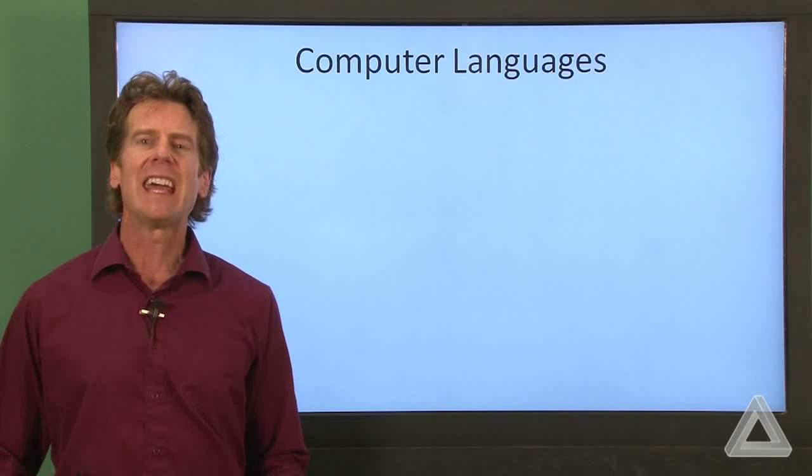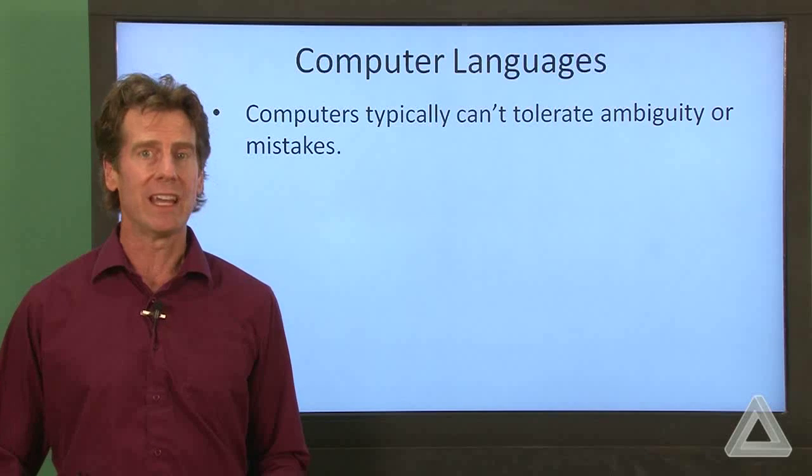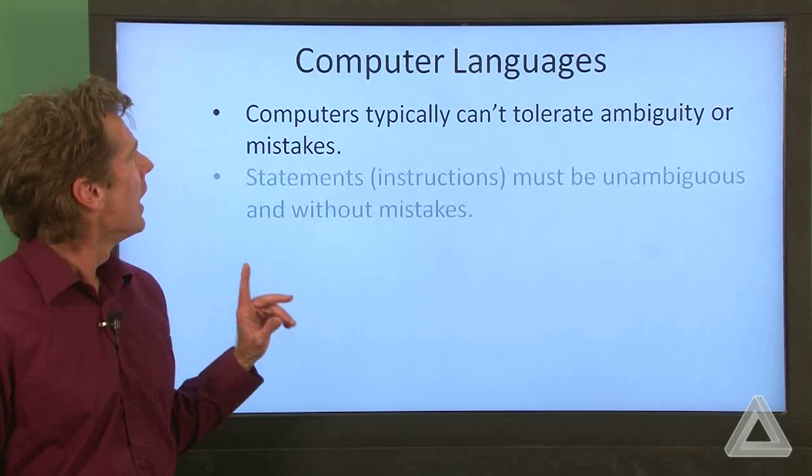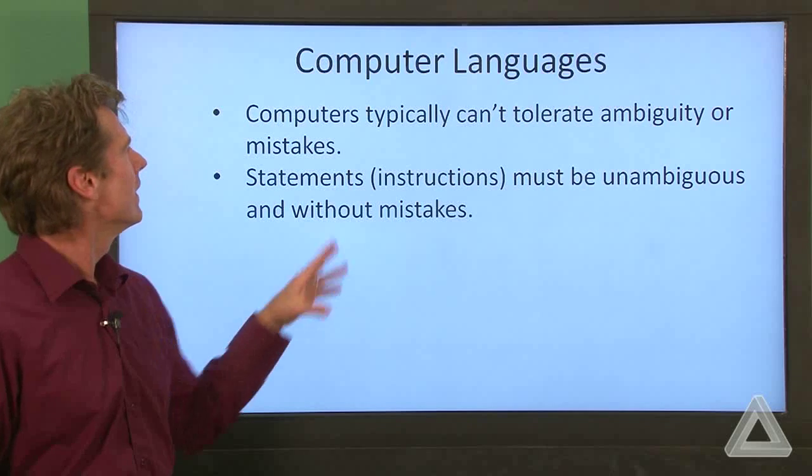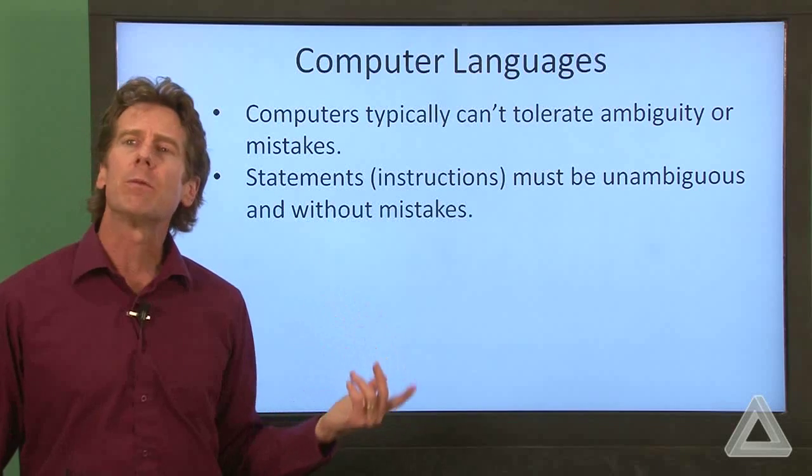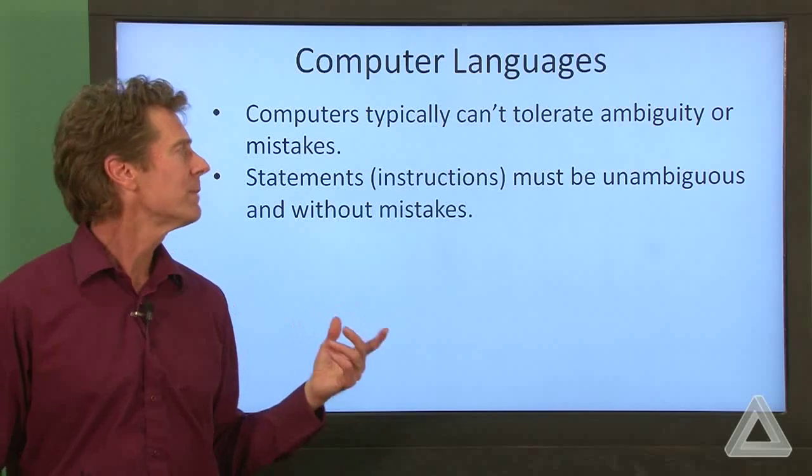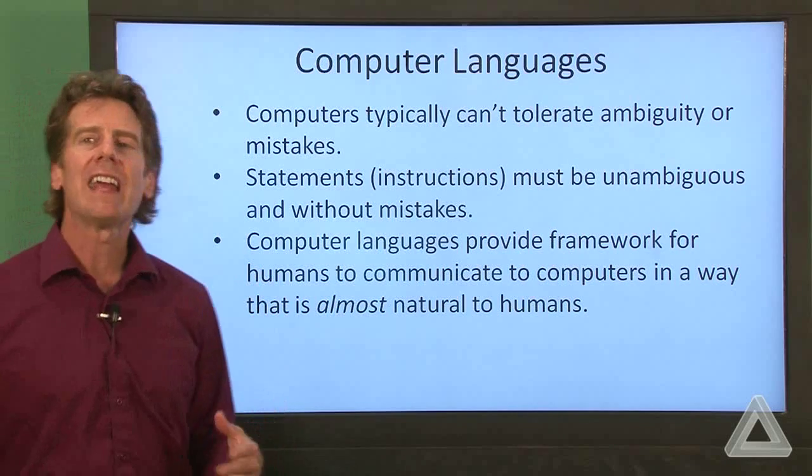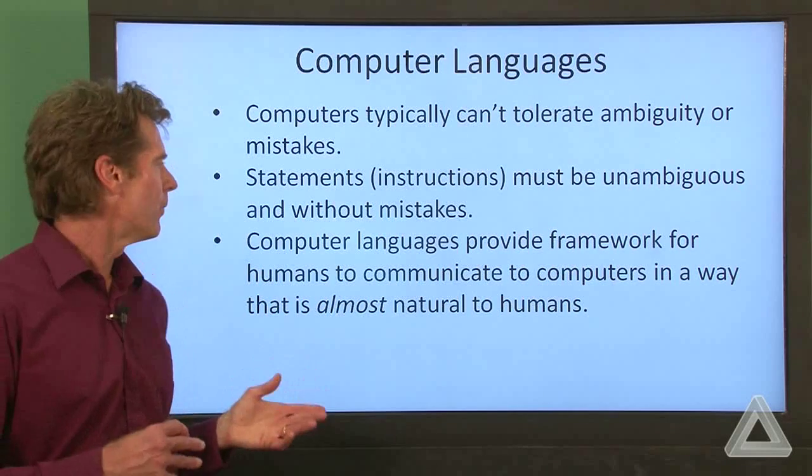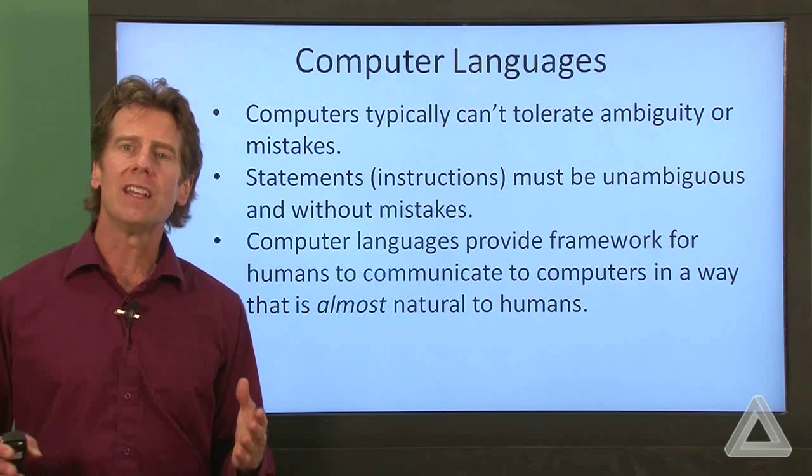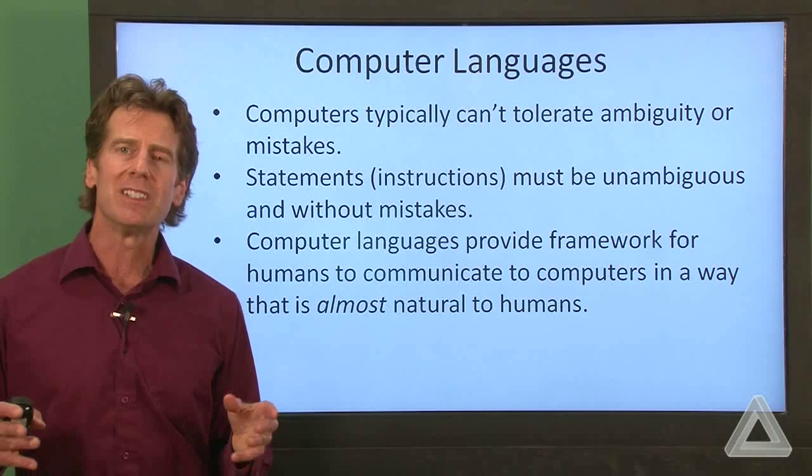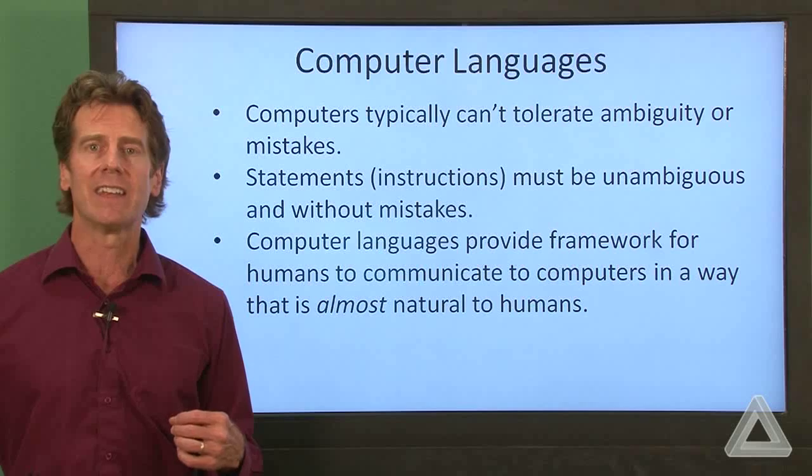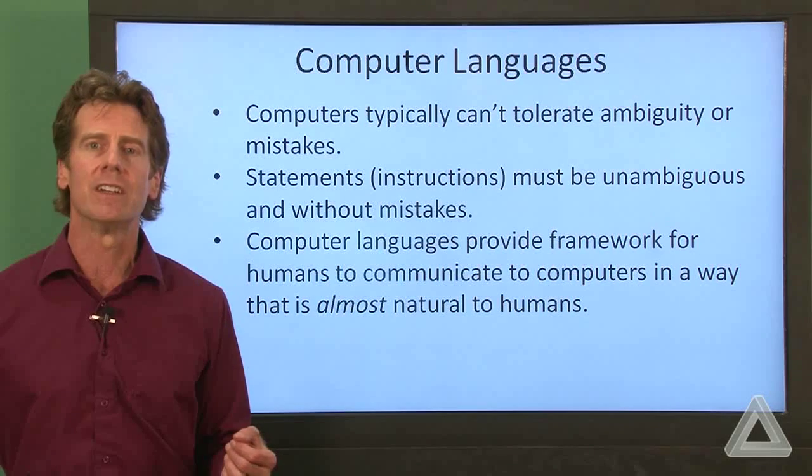So we come up with languages that force us to be very precise in the information that we convey. Computers can't handle ambiguity and they typically, without a lot of programming by us, handle mistakes. So another way of saying this, this is essentially repeating the first sentence. The statements or instructions that we provide to a computer must be unambiguous and without mistakes. So the computer languages provide a framework for enforcing this. And what we try to do is make it so that the grammar of a language is something that a human can decipher and yet it can easily be translated into the ones and zeros that a computer can understand.